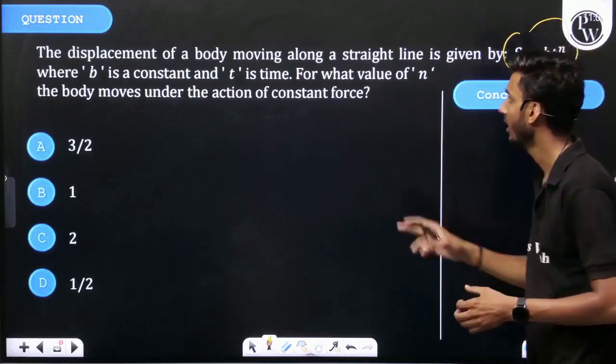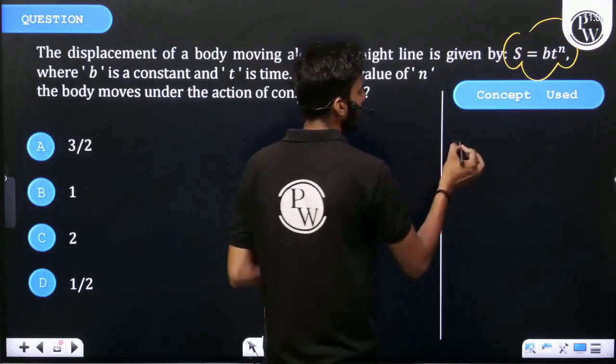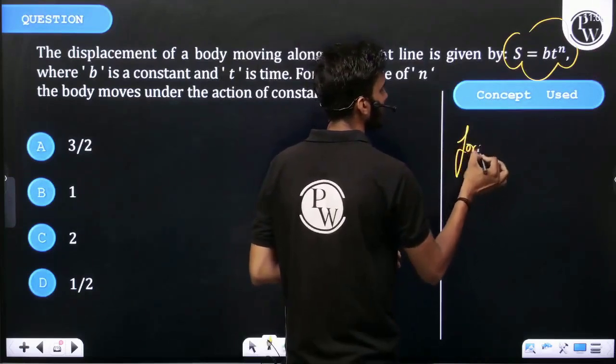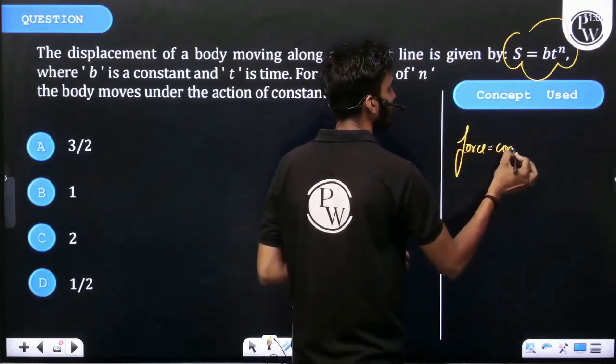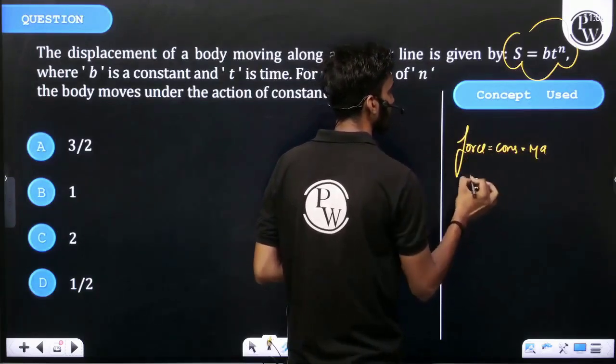Then we can say force is equal to constant, which equals ma. Therefore, acceleration is also constant.